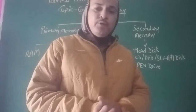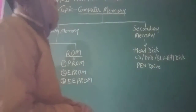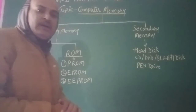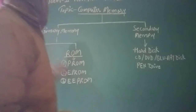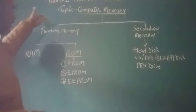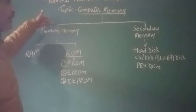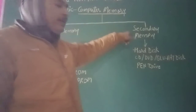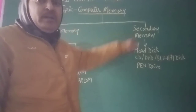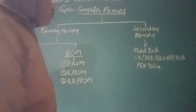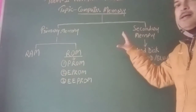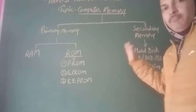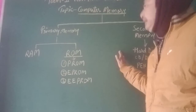What is computer memory? There are two types of computer memory. The first one is primary memory and the second one is secondary memory. The combination of these two types of memory makes a computer work efficiently.